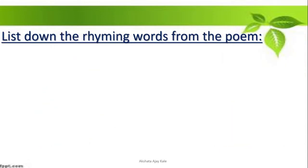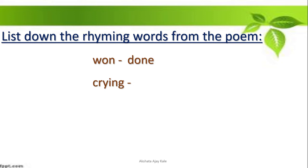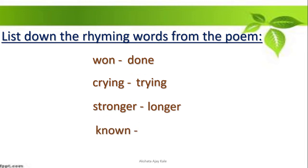Now we will move to the exercise part. List down the rhyming words from the poem. We have circled the rhyming words from each stanza. We will list them here: 'one' and 'done'; 'crying' and 'trying'; 'stronger' and 'longer'; 'known' and 'grown'; 'beat' and 'defeat.'